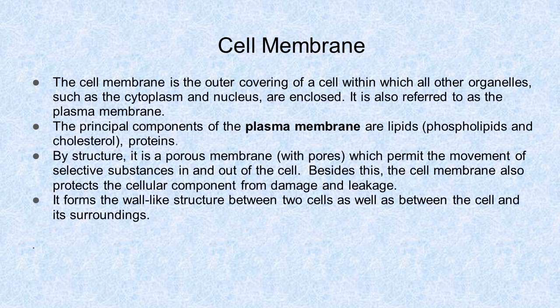Cell membrane: the cell membrane is the outer covering of a cell within which all other organelles such as the cytoplasm and nucleus are enclosed. It is also referred to as the plasma membrane. The principal components of the plasma membrane are lipid and proteins.